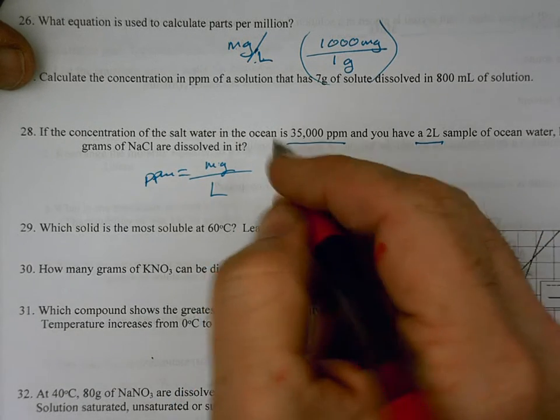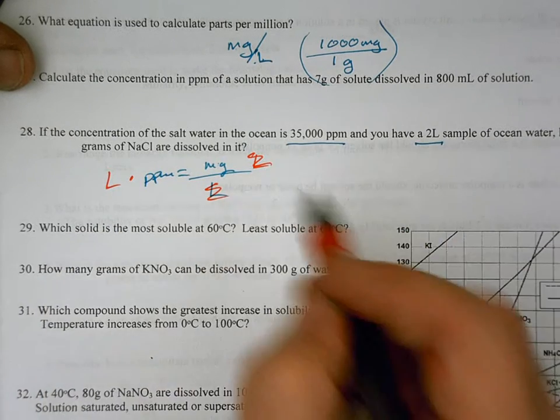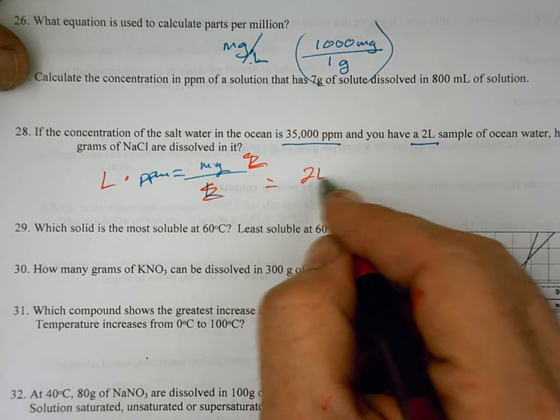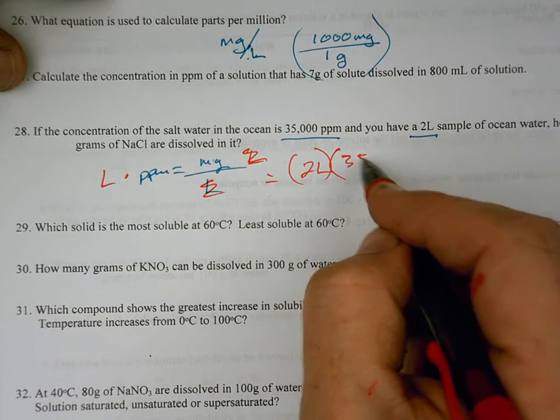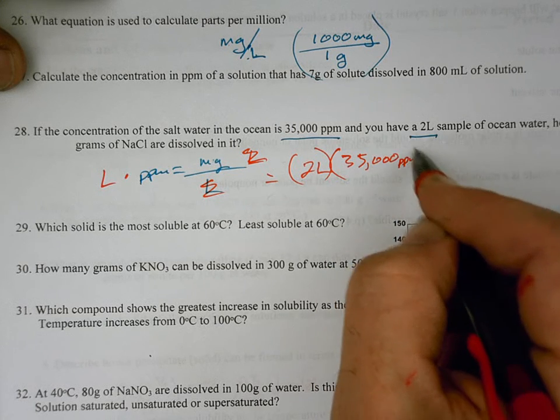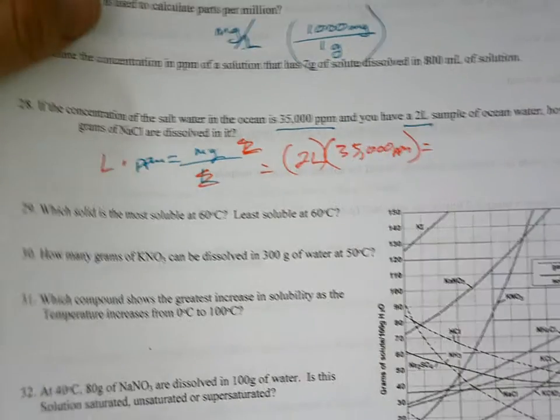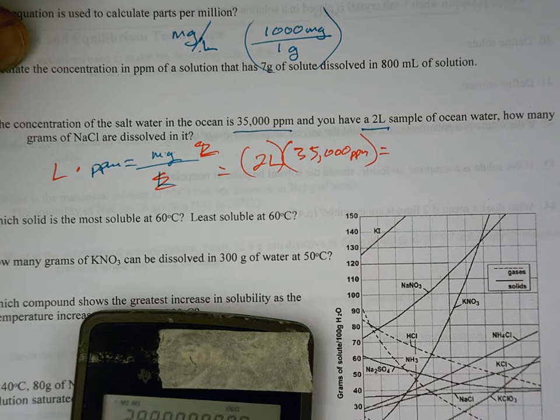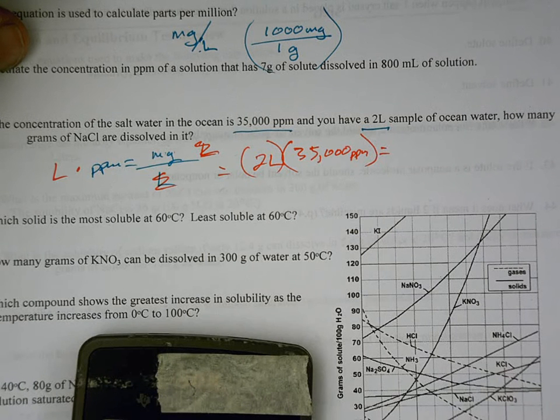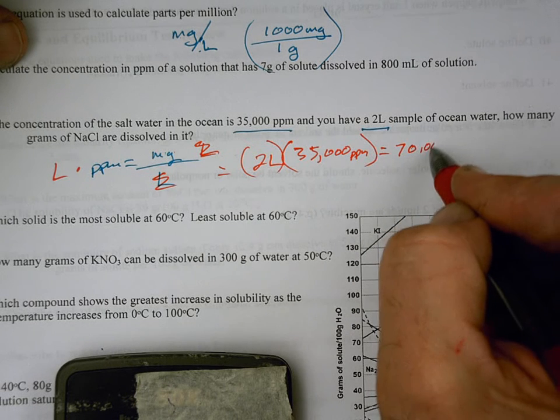So let's multiply both sides by L, by the number of liters. So the number of liters is two liters times our parts per million, 35,000 parts per million. Now, that's going to equal milligrams, and we're not done with the answer at that point. So what's 35,000 times two? 35 times two, so 70,000 milligrams.